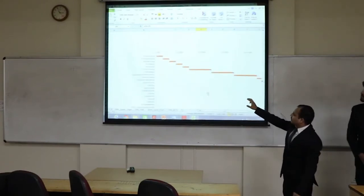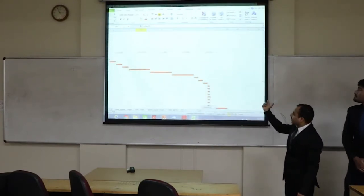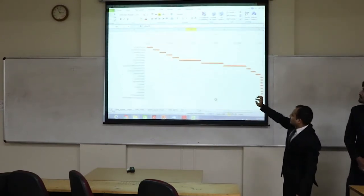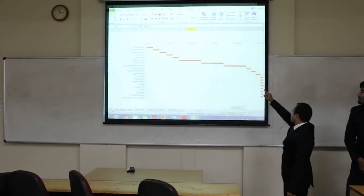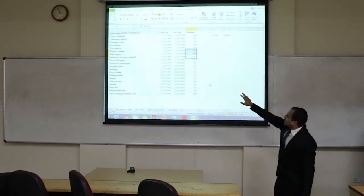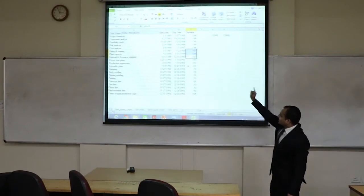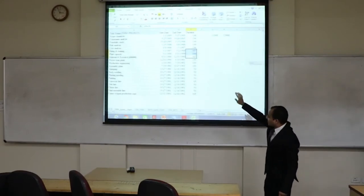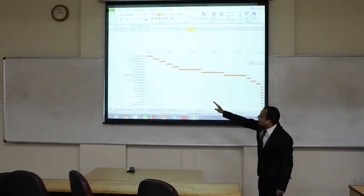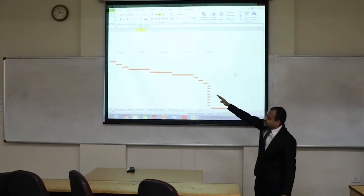These were the activities which have been mentioned here with start date and end date. These are the start date and end date with the duration. This has been used for critical path method and same has been used for running the Gantt chart.